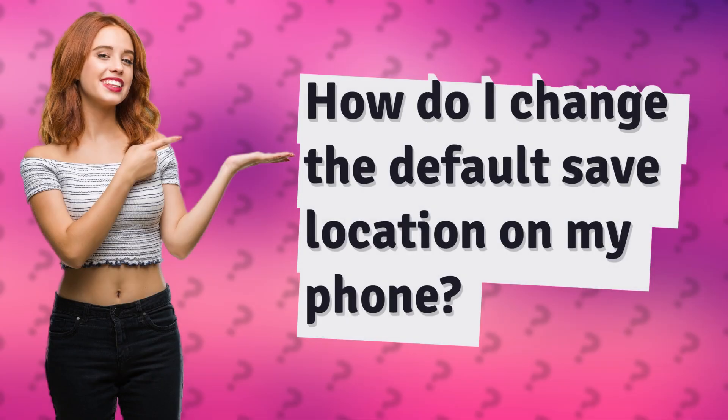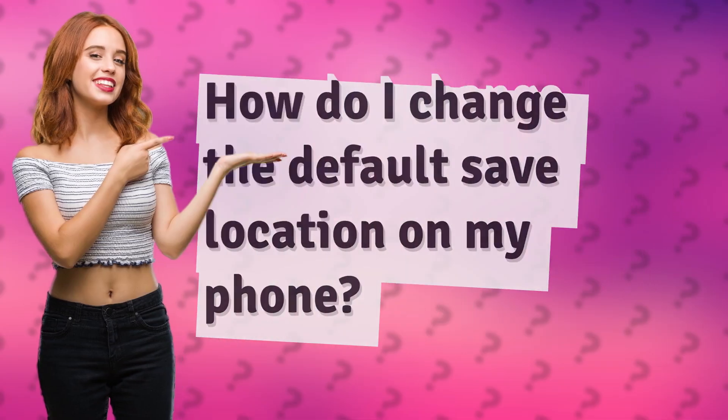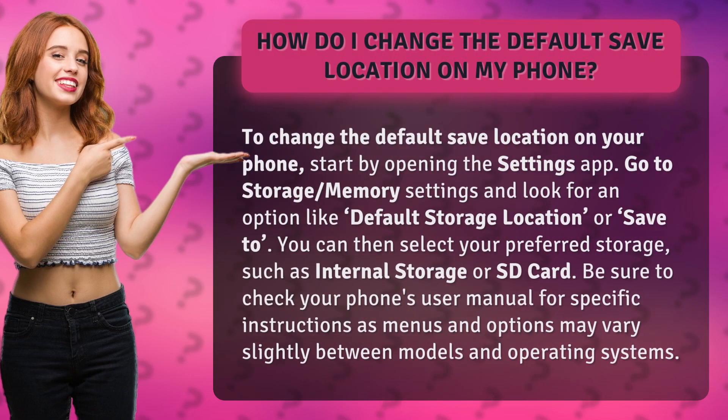How do I change the default save location on my phone? To change the default save location on your phone, start by opening the Settings app. Go to Storage, Memory Settings and look for an option like Default Storage Location or Save To. You can then select your preferred storage, such as internal storage or SD card.